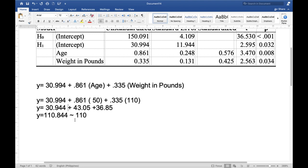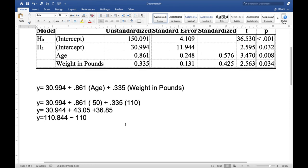So for a patient who is 50 years old with 110 weight in pounds has a forecasted systolic blood pressure of 110. Remember this is hypothetical data. This is just for the sake of sample simulation using the JASP software.